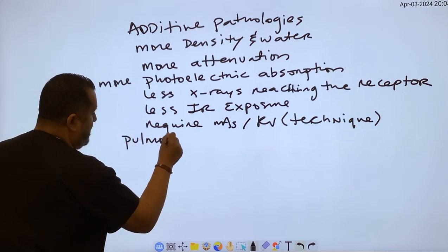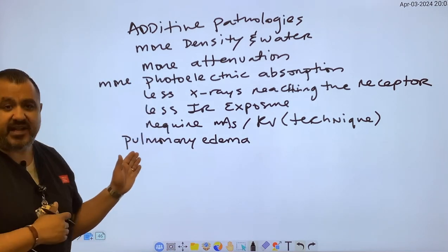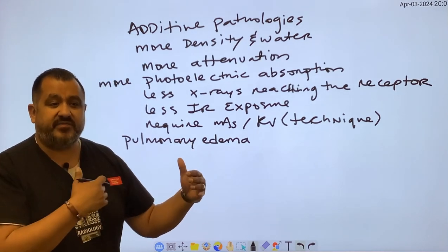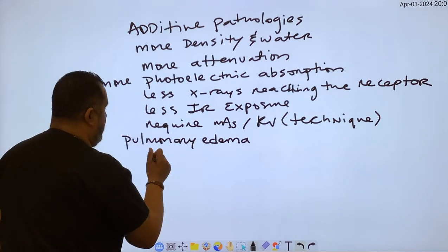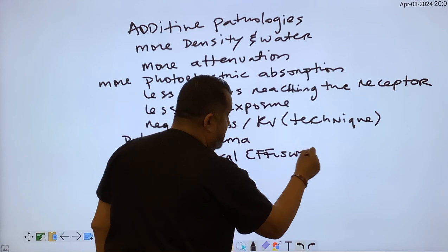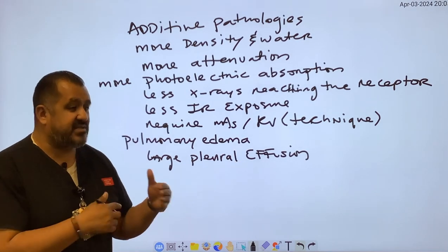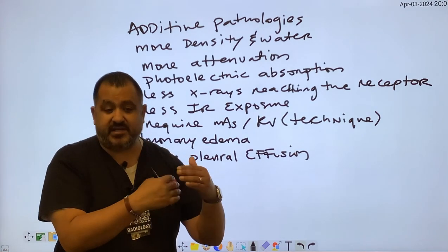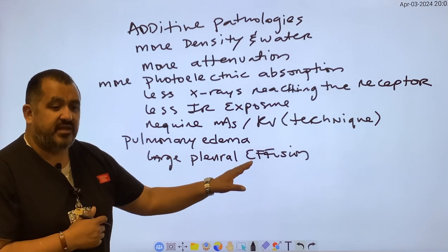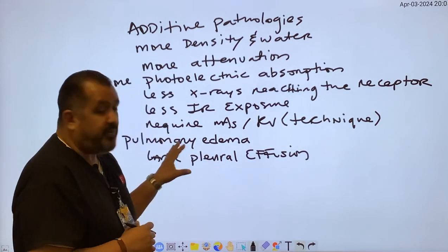One of them is pulmonary edema. Edema is a fluid or water retention, and pulmonary pertains to the lungs. We have an increase of fluid in the interstitium of the lung tissue itself. Pulmonary edema is different from a large pleural effusion — a pleural effusion is a water collection occurring in the pleural cavity, the space between the visceral and parietal linings. Pulmonary edema is fluid retention within the lung tissue itself, but they're both additive pathologies.